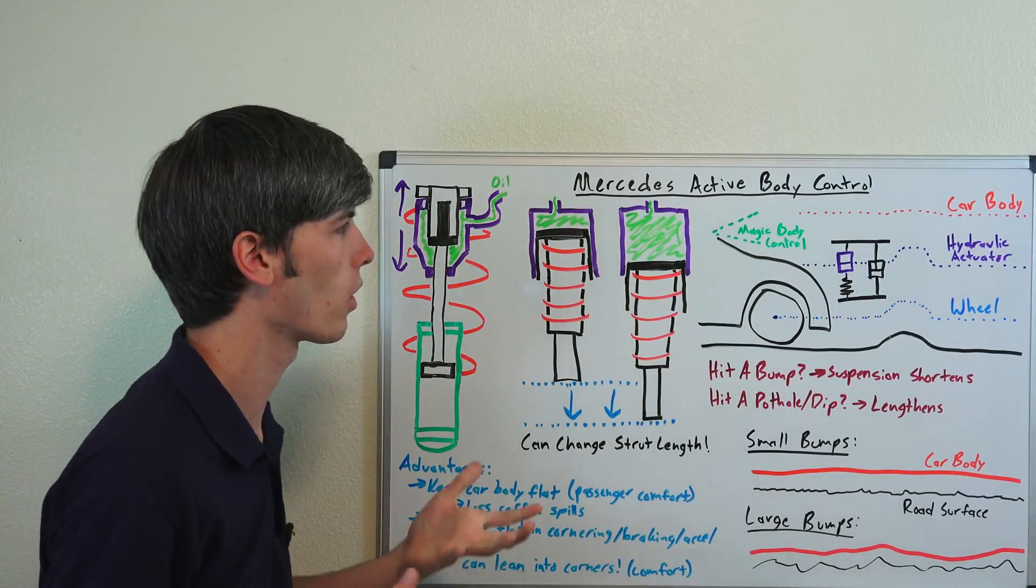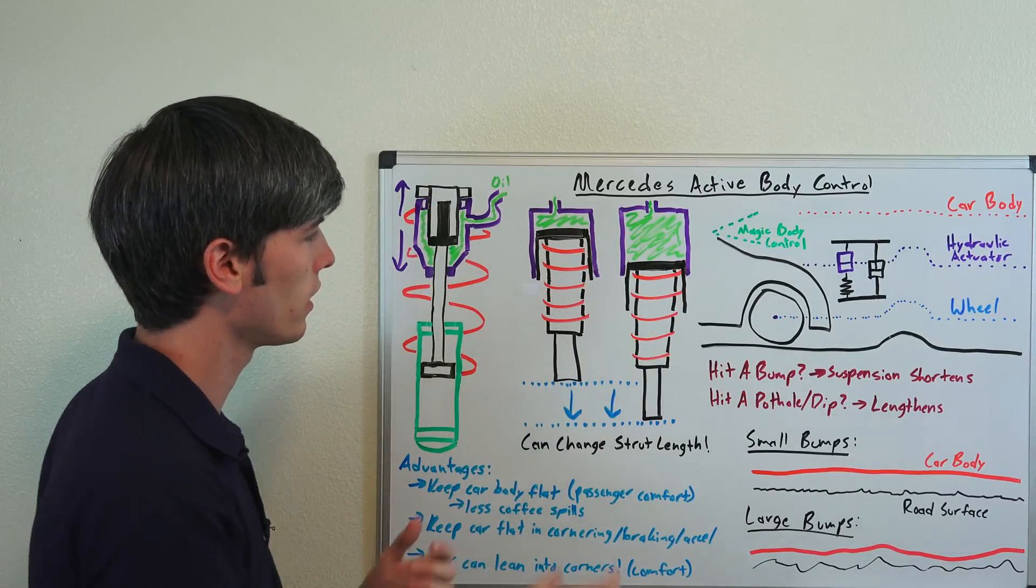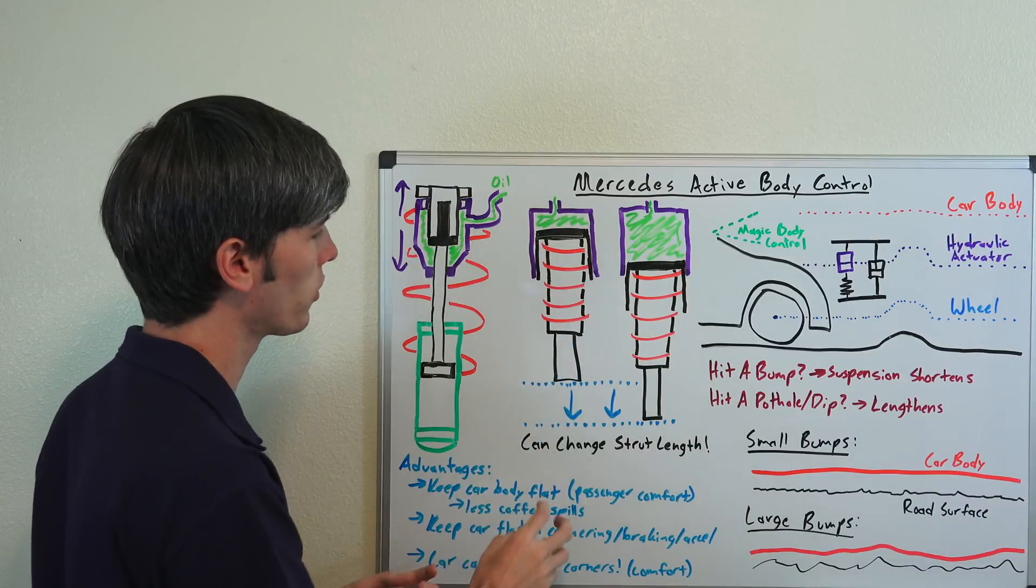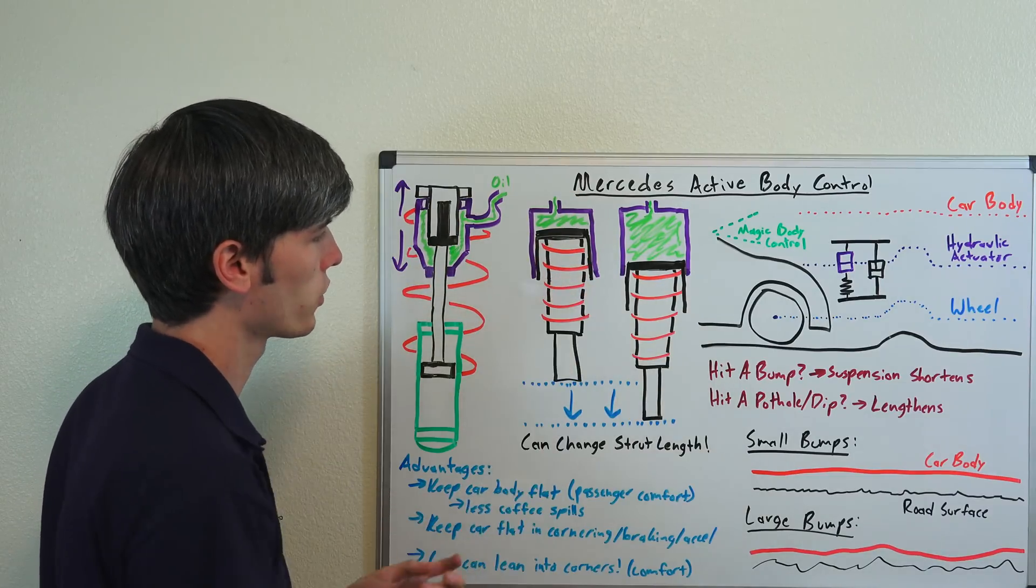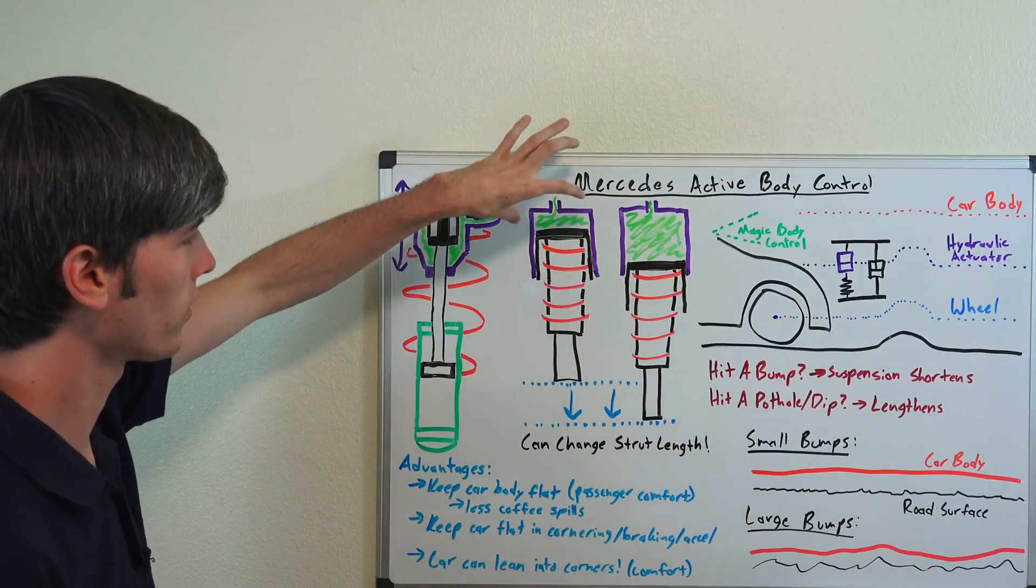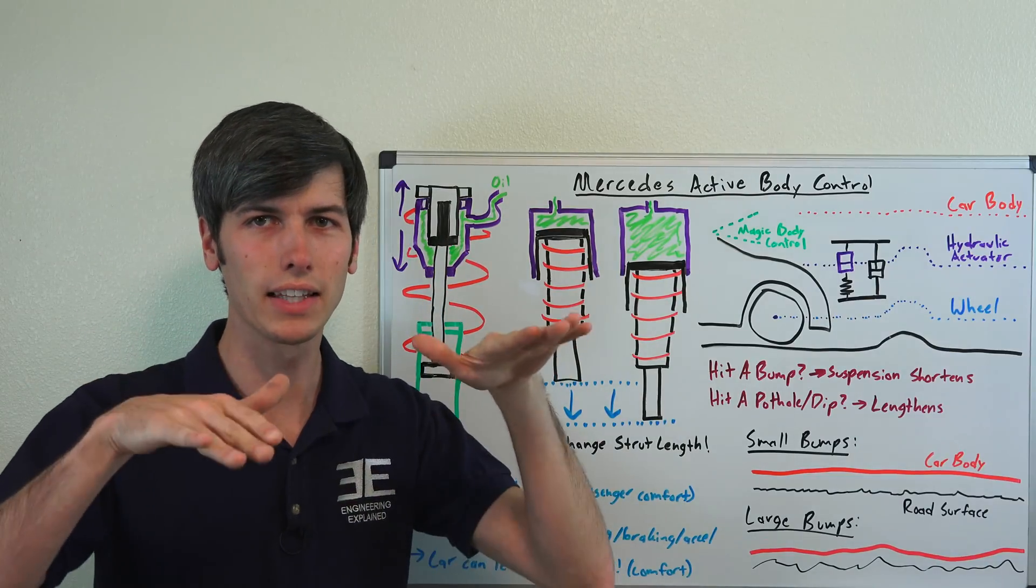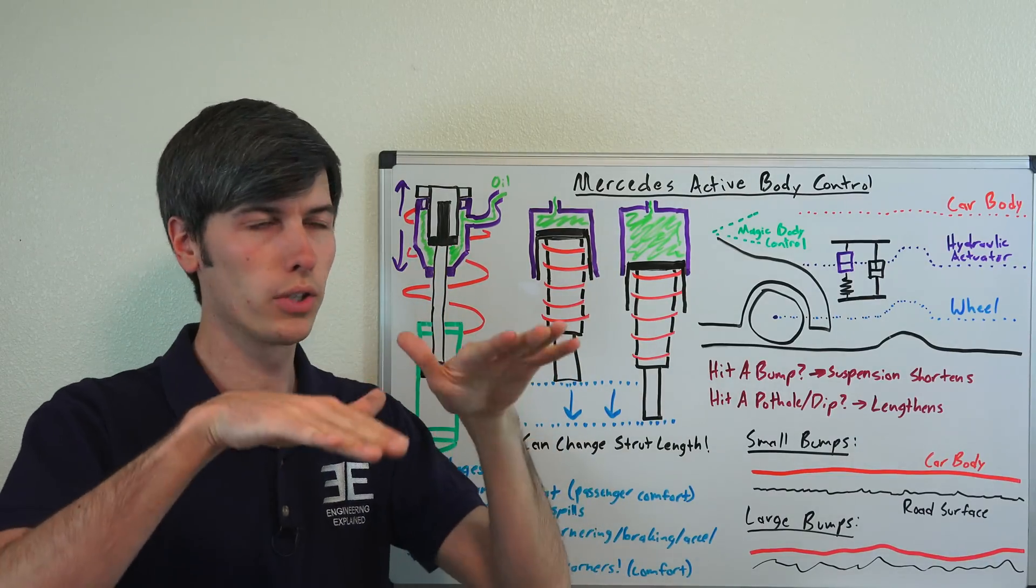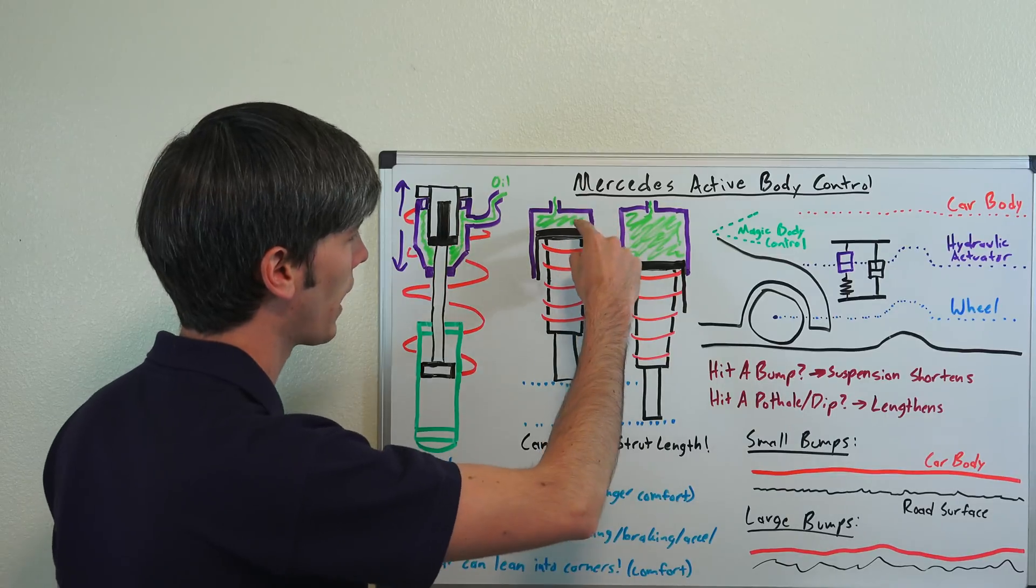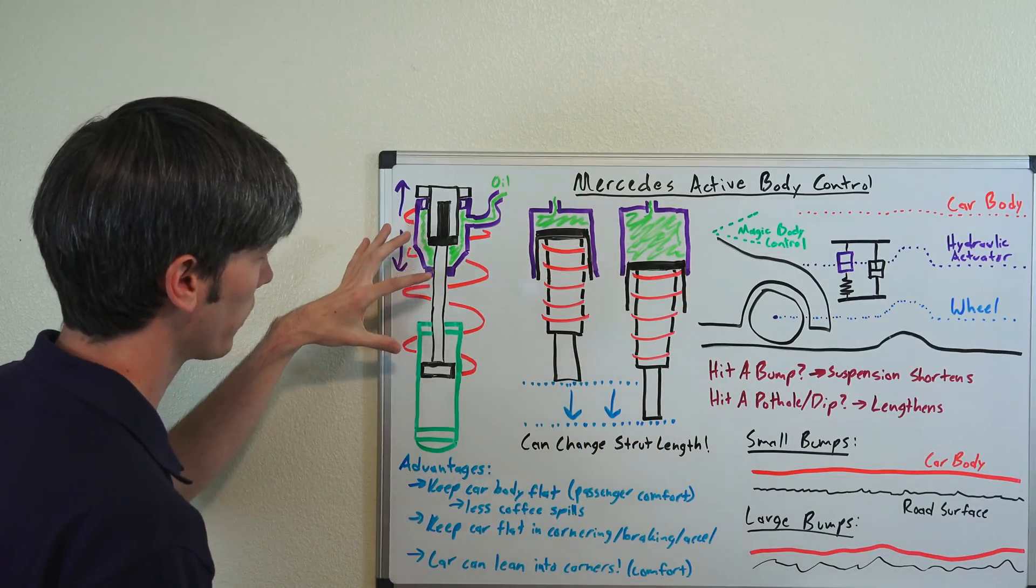How does that active body control work? Basically, you've got the strut here. You've got your spring and your shock absorber. In series with that, you have a hydraulic cylinder. What this hydraulic cylinder allows you to do is to change the length of that strut.